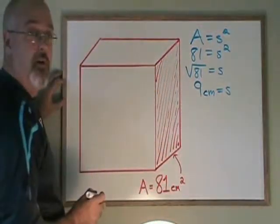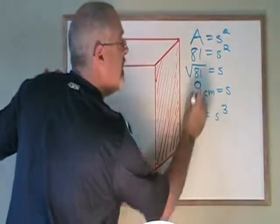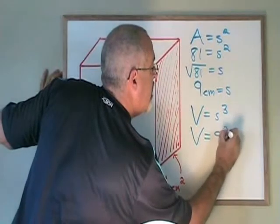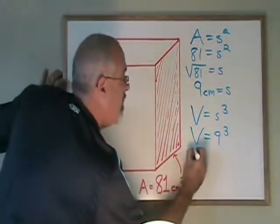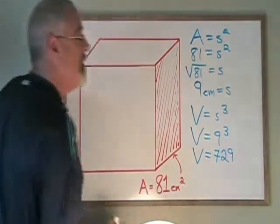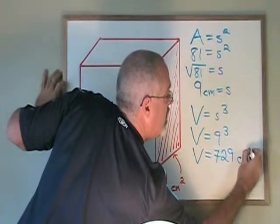Now we can use our volume formula. Volume equals s cubed. Our side length is 9 centimeters, so the volume is going to be equal to 9 cubed. 9 cubed is 729, so the volume of this cube is 729 centimeters cubed.